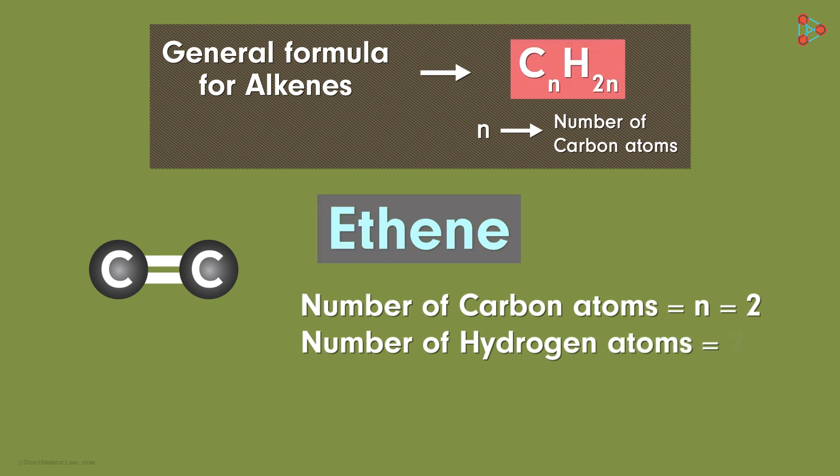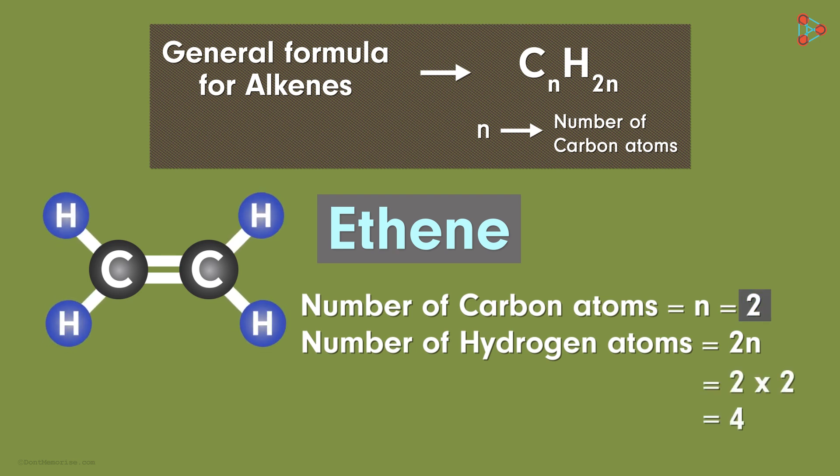Based on the formula, it is 2 times n. As n is 2, we get 4 hydrogen atoms in ethene. That gives us the chemical formula for ethene as C2H4.